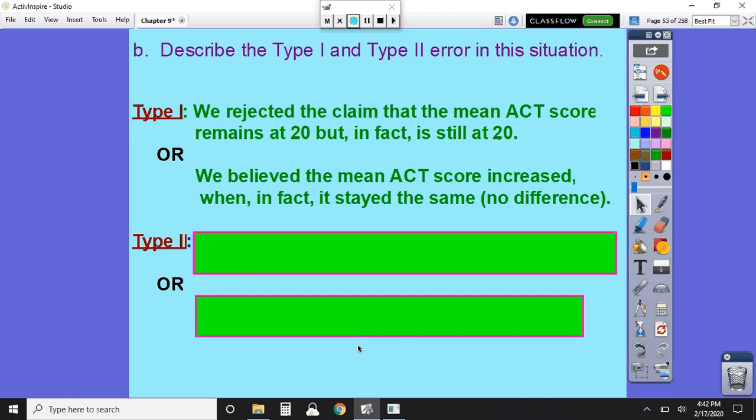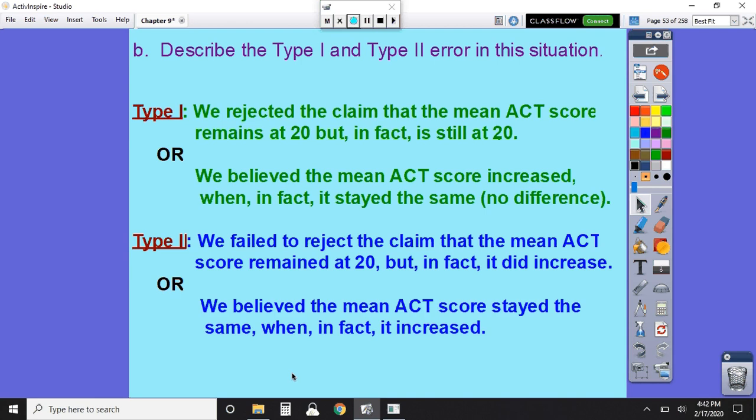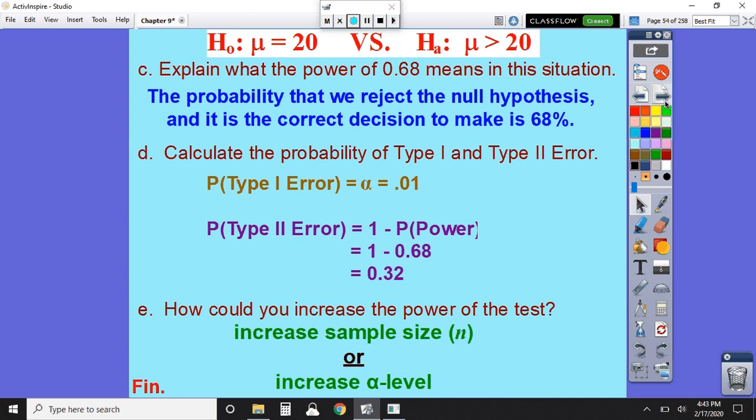For a type 2 error, we fail to reject the null hypothesis, but we really should have rejected it. So one way of looking at it is that we think that the mean ACT score is still 20, but really it went up. So we don't think that the prep course helped out at all, but it really did help. Or another way of putting it, that we believe the mean ACT score stayed the same when in fact it really increased. In terms of these two that I have here, I usually go and write mine like these second ways. I always like to talk about what I believe is happening when in fact this is what's really happening. So we believe is what is based on your decision for the null hypothesis. Did you reject it or did you fail to reject it? When in fact is what we should have done instead. We shouldn't have rejected it or we should have rejected it.